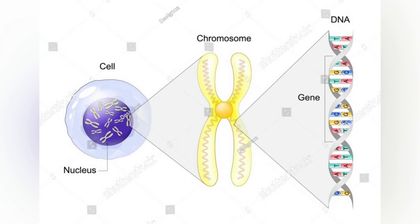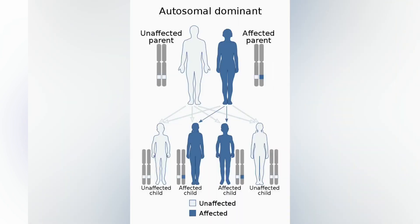The three forms of VWD are hereditary, acquired, and pseudo or platelet type. The three types of hereditary VWD are VWD type 1, VWD type 2, and VWD type 3. Type 2 contains various subtypes. Platelet type VWD is also an inherited condition.